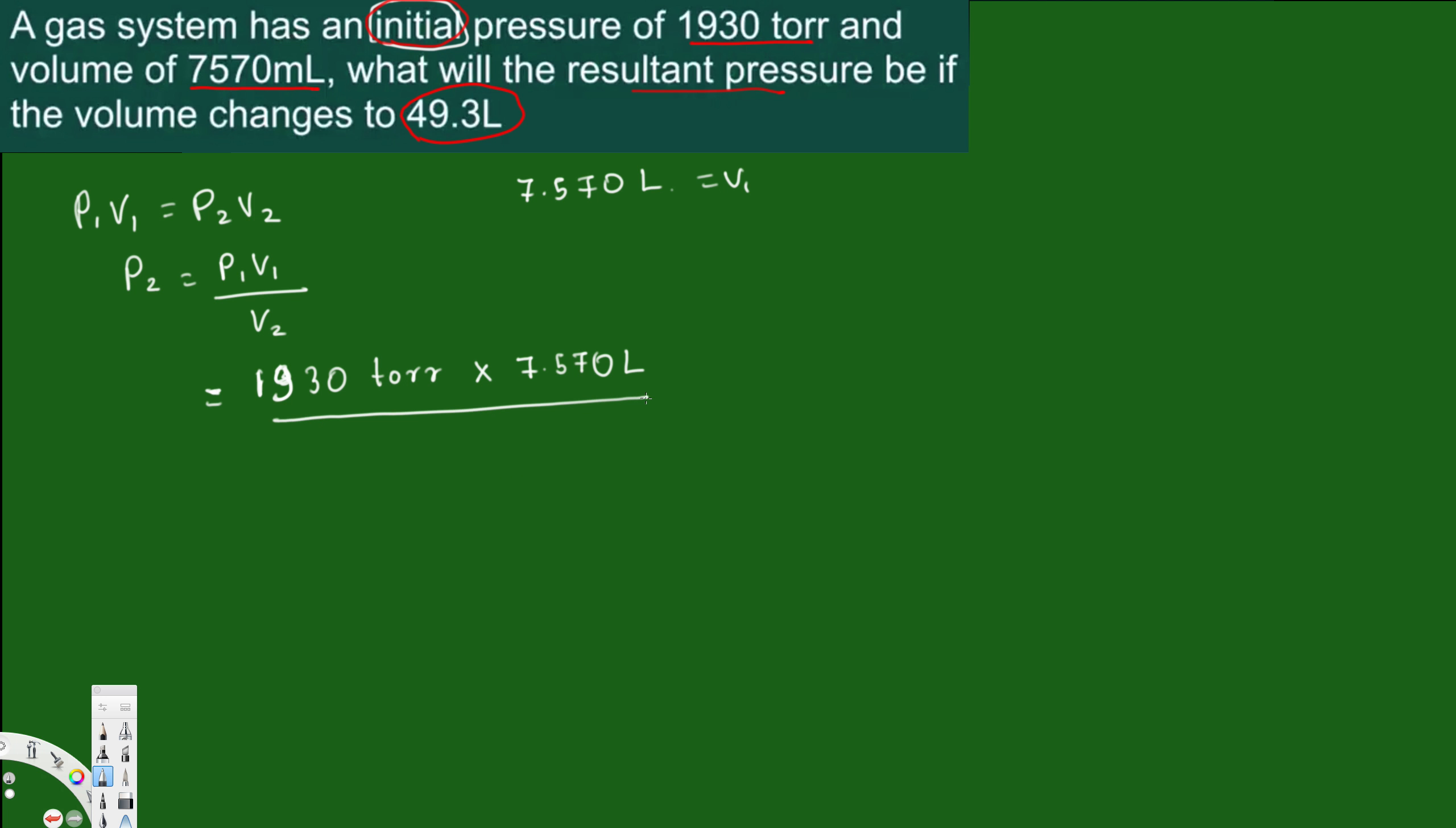In the bottom we are going to have V2, that is 49.3 liters. So here, liter-liter cancels each other, and whatever the value you are going to find is going to give the value of torr. So if you calculate this one, this will give you 296.4 torr.